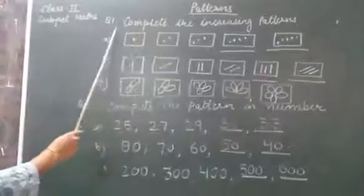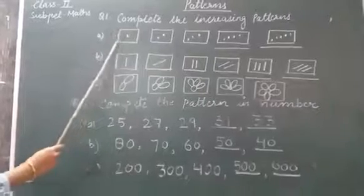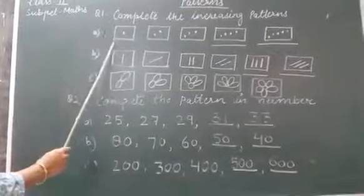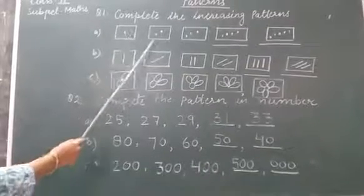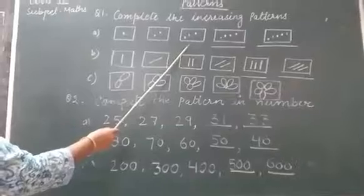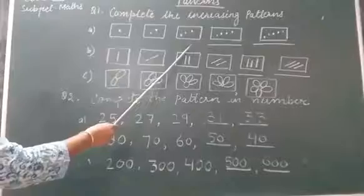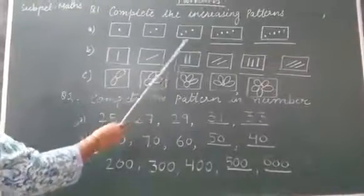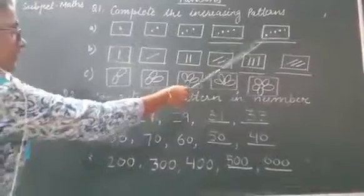First question, complete the increasing pattern. In this question, have you seen the pattern should be increase. First box, one dot. Second box, two dots. Third box, three dots. That means increase one and one dot increase. We fill next box accordingly. Fourth box, four dots. Five box, five dots.